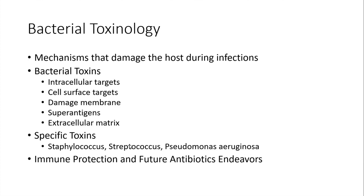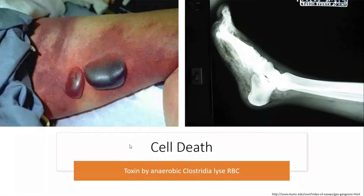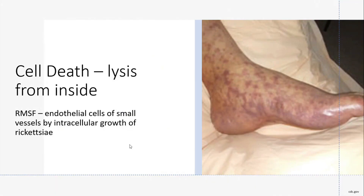When our bodies and hosts encounter microbes, there is lysis of cells, altered metabolism, mechanical damage, and host responses that damage the body. For example, Clostridium species lyse red blood cells through their exoenzymes and released toxins, creating a very anaerobic milieu for the bacteria to thrive. Some of these enzymes are very membrane-damaging and are not specific to a particular cell type or tissue.